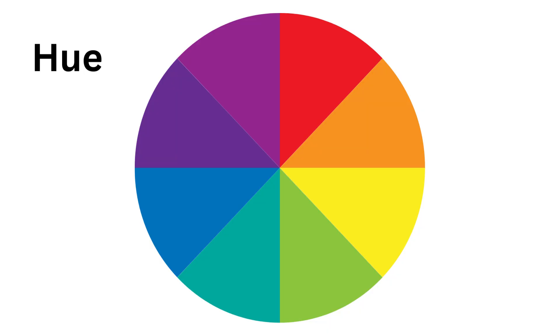H for hue. So, when we say red or blue or green, we are talking about different hues. Think of it like the name of a color.